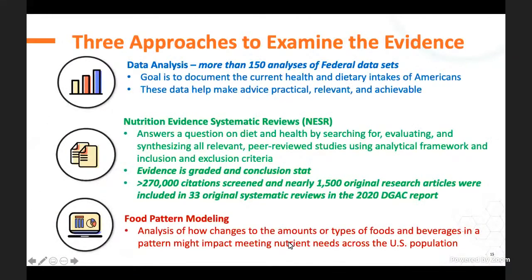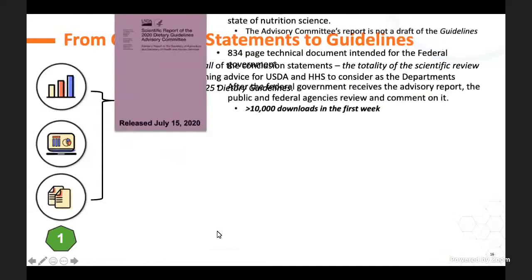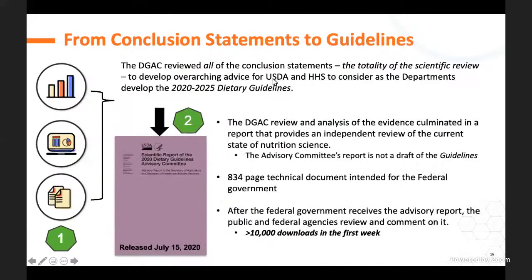The last type of evidence is food pattern modeling—an analysis of how changes in the amounts or types of foods and beverages in a pattern might impact meeting nutrient needs across the U.S. population. Based on the data analysis of what people are eating and the evidence of what people should be eating, we can develop food patterns to help people achieve those goals. For example, the recommendation to limit added sugar drew heavily from food pattern modeling: do we have room in our diets for added sugar, and if so, how much?